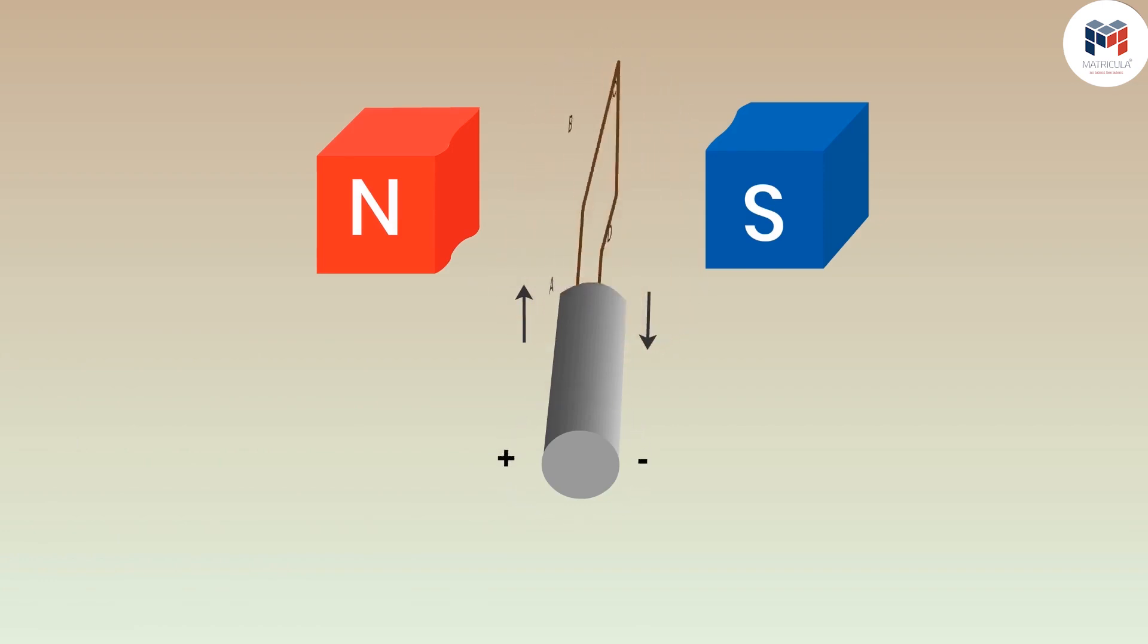After half cycle AB and CD will interchange their positions and the direction of current would also get changed in both arms. Does this make any sense? Have you ever seen any fan or cooler that rotates in one direction for some time and then changes its direction?